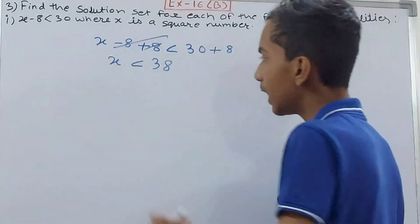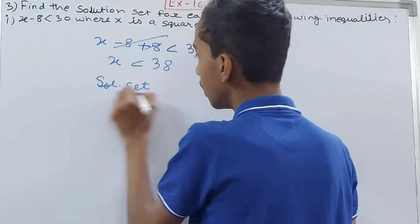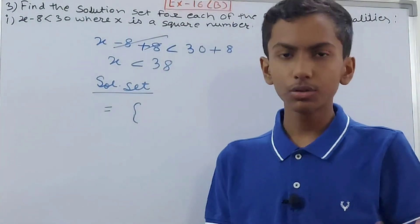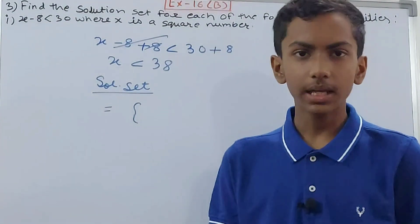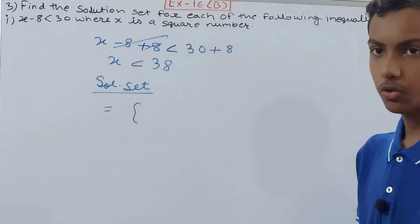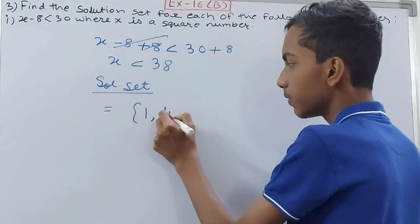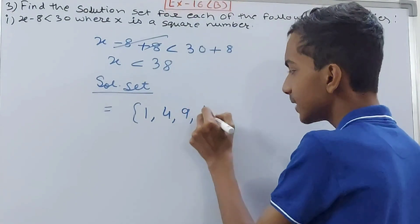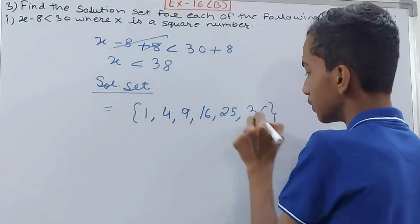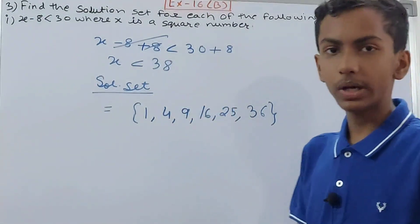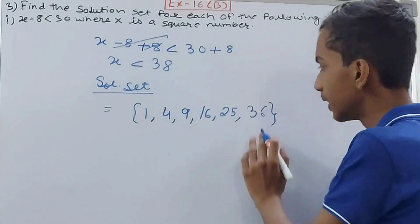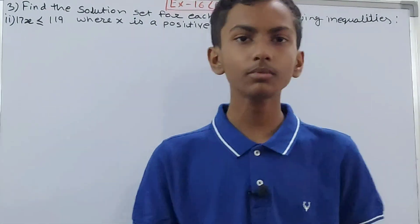Now we make the solution set. The condition is that x must be a square number. Square numbers are squares of whole numbers: 1² = 1, 2² = 4, 3² = 9, 4² = 16, 5² = 25, 6² = 36. We cannot take 7² = 49 since 49 is more than 38. So the solution set is {1, 4, 9, 16, 25, 36}.